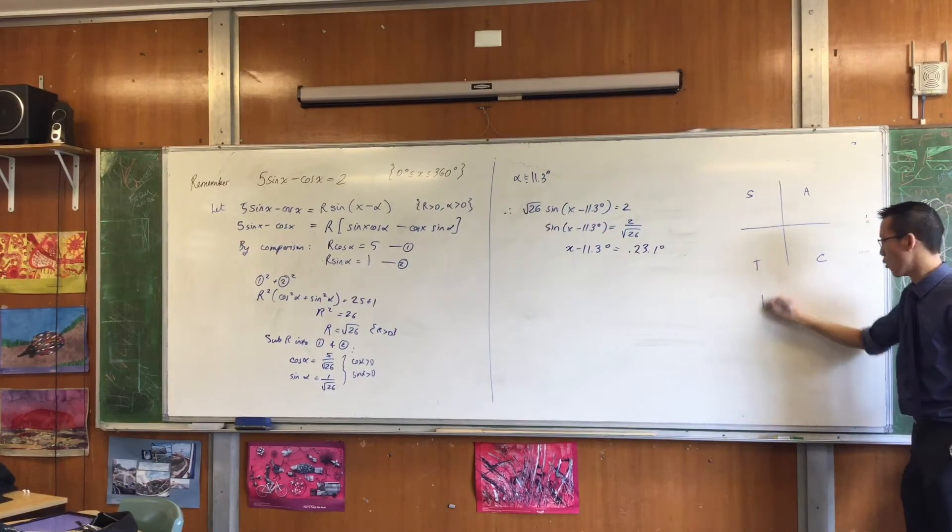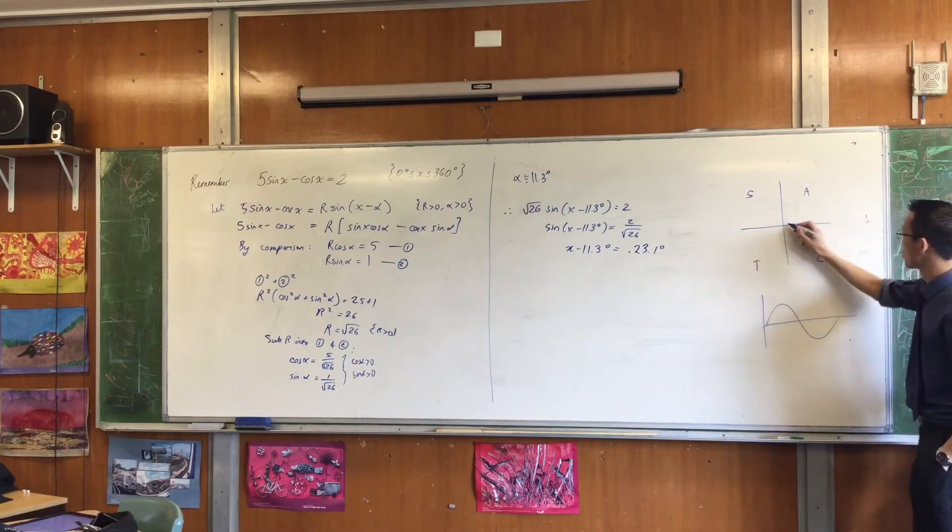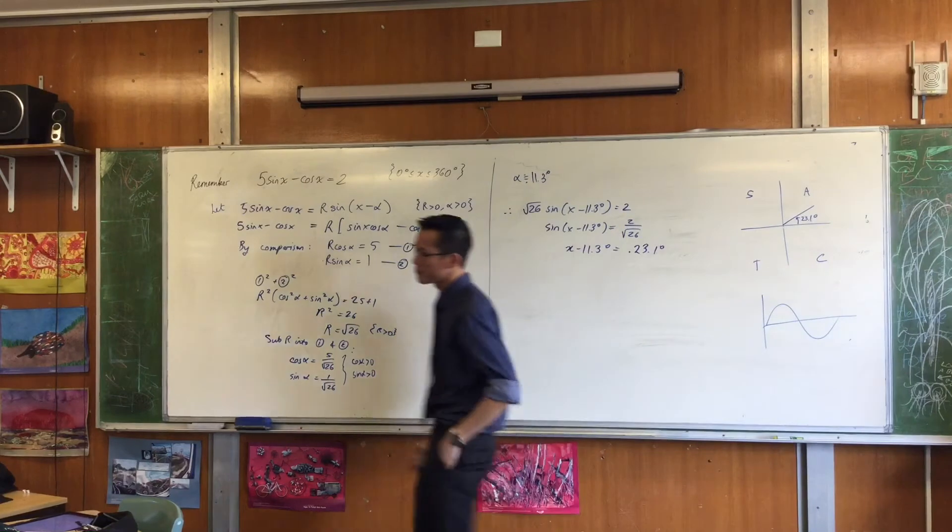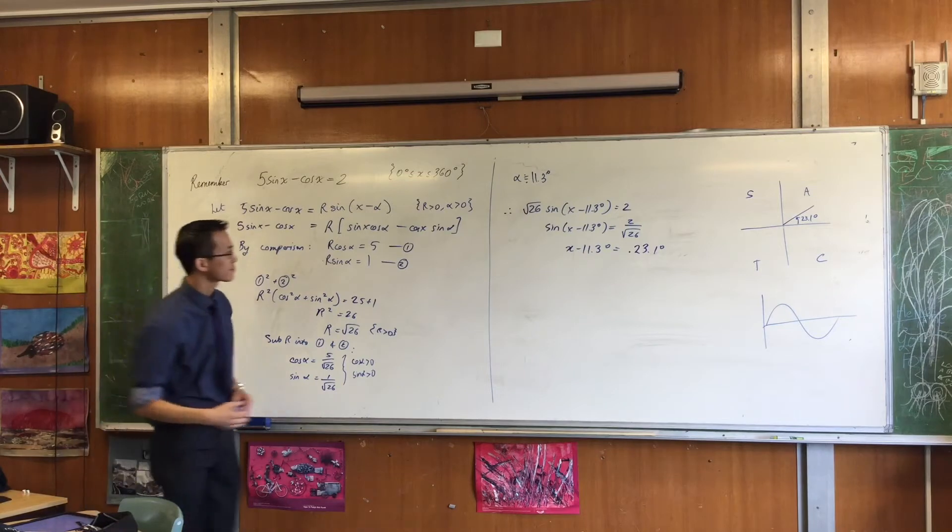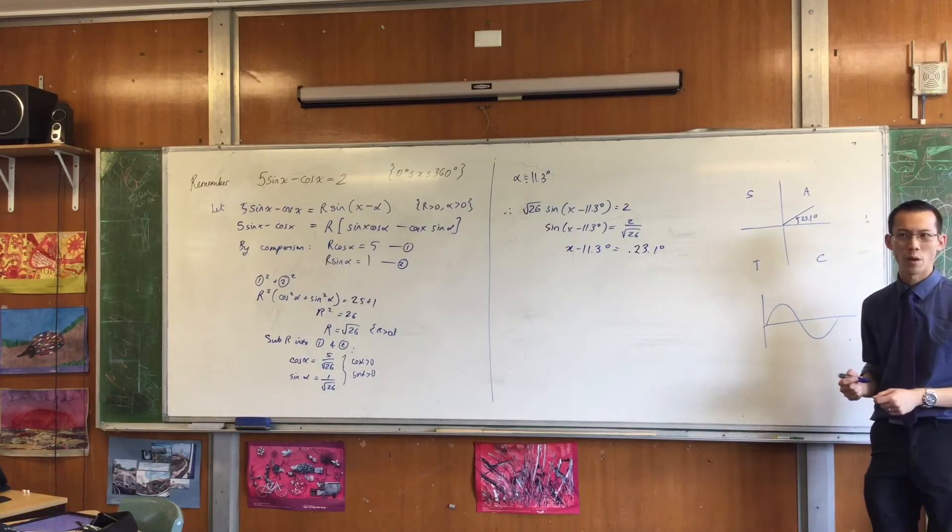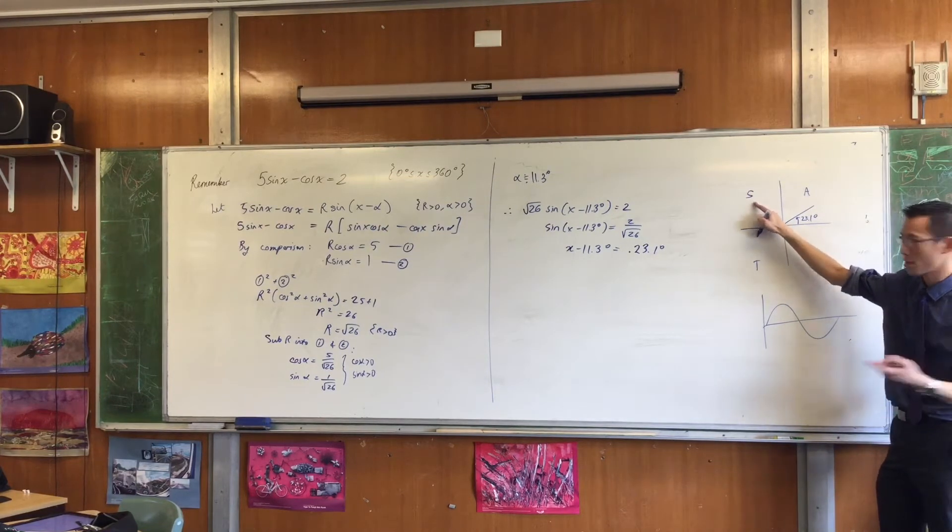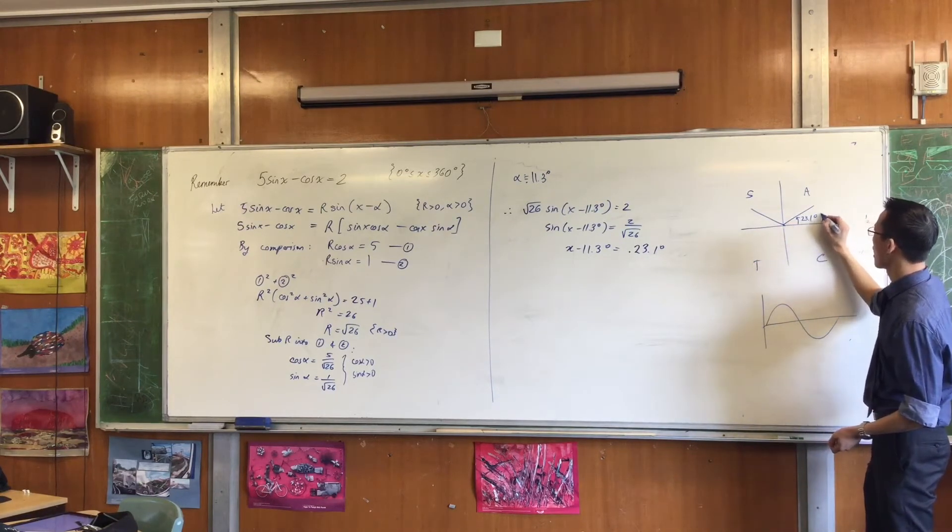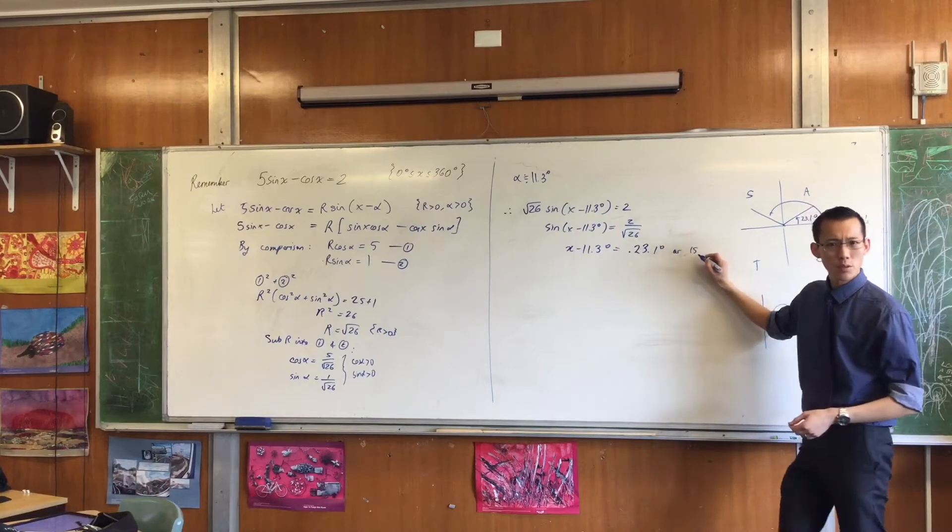You can either do it this way, or you can do it this way, right? We're saying 23.1° is a solution. Something like that. So where's the other solution? One solution? Where's the other one? It's over in this quadrant, right? S for sine, because sine is positive. See that? So 23.1° here means 180 minus that. Can you give me a number? 156.9.